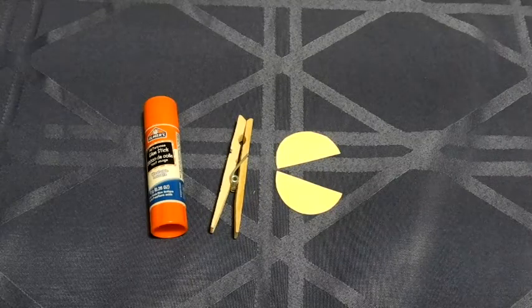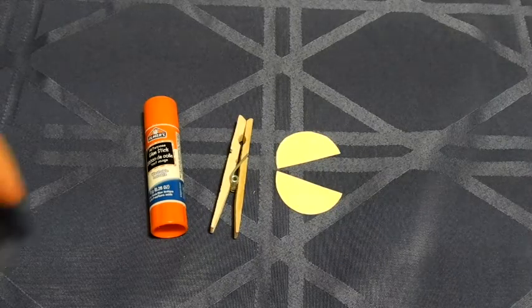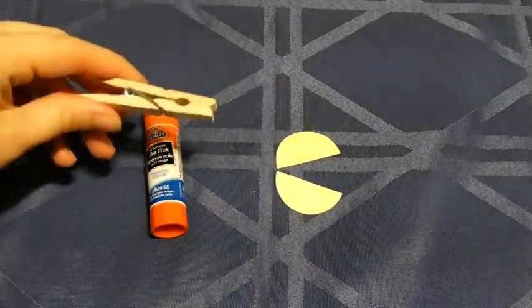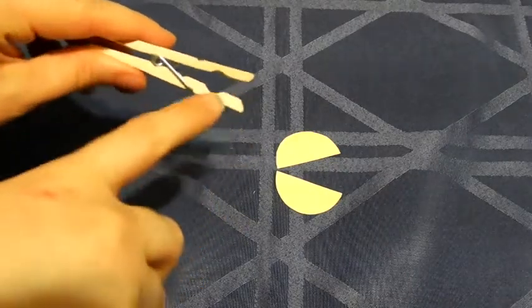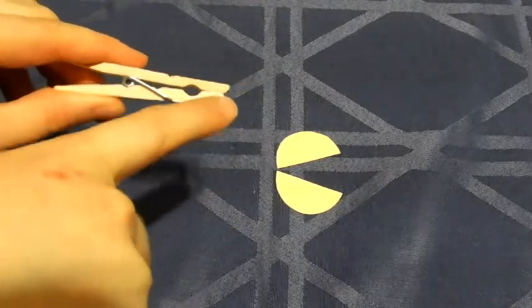In this video, we're going to be making Pac-Man clothespins. To begin, take your clothespin and cover it with lots of glue on the part between the metal and the tip.